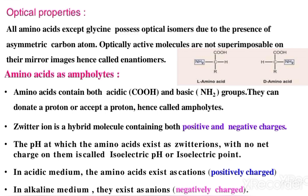Amino acids are ampholytes. They have both an acidic group and a basic group, which is why we call them ampholytes. The acidic group is -COOH and the basic group is -NH2. The acidic group can donate a proton and the basic group can accept a proton — hence they are called ampholytes.